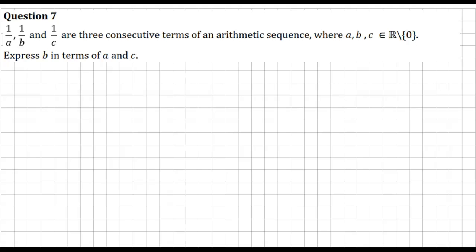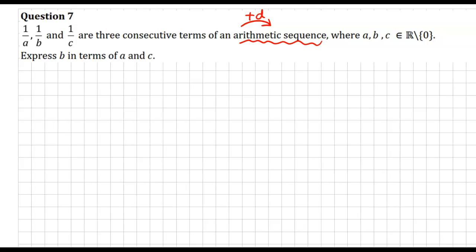So we'll use our same technique again of knowing, because they're arithmetic, that to move up along, we add on a d. So basically, if we subtract two of these, we need to get d.